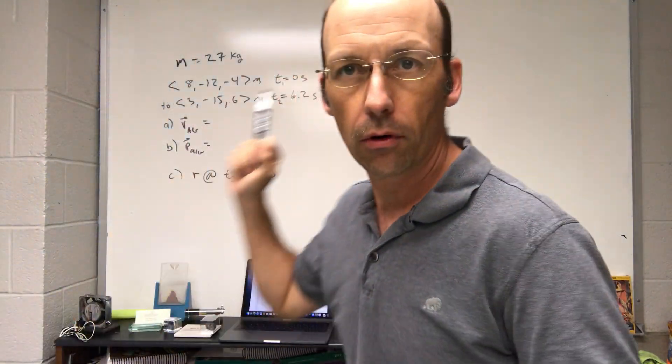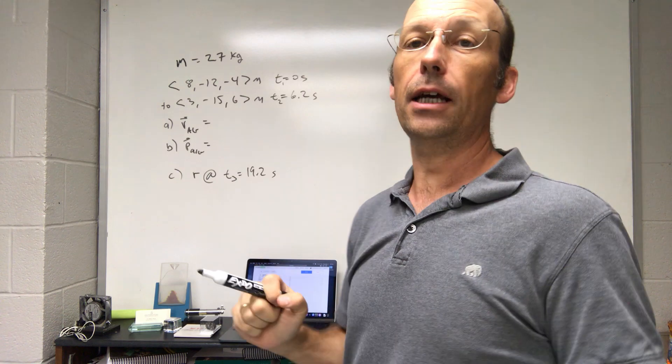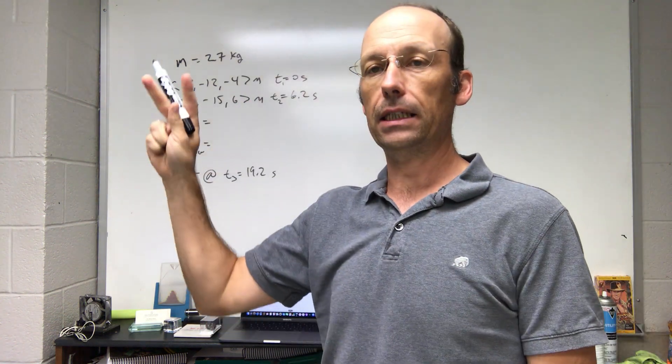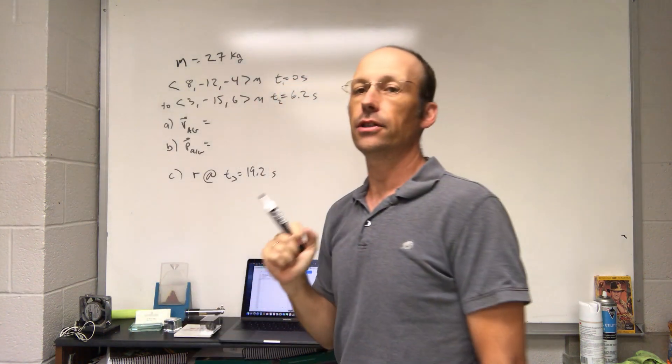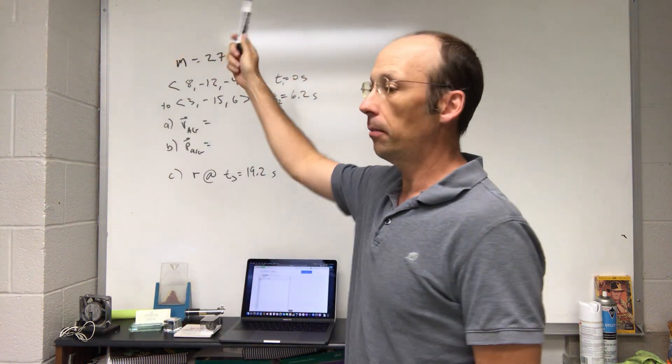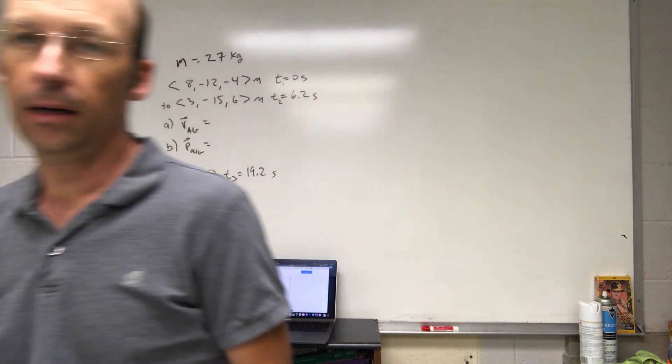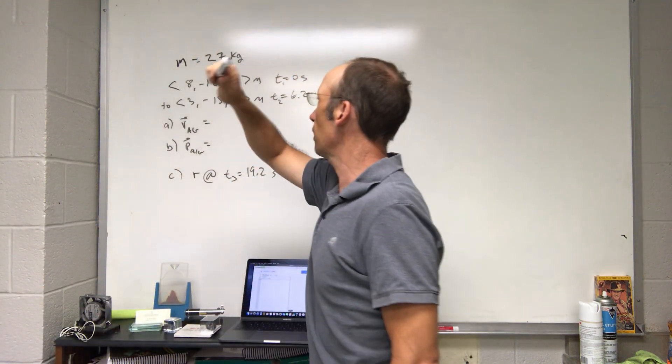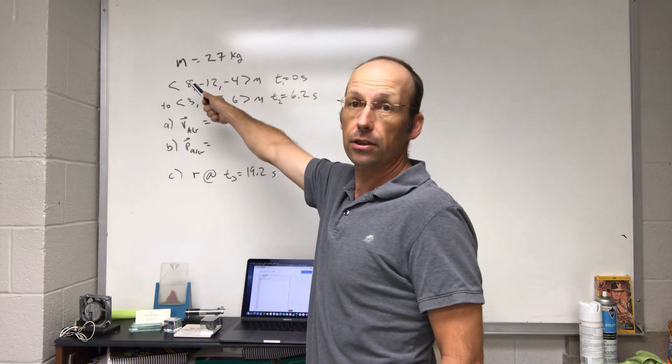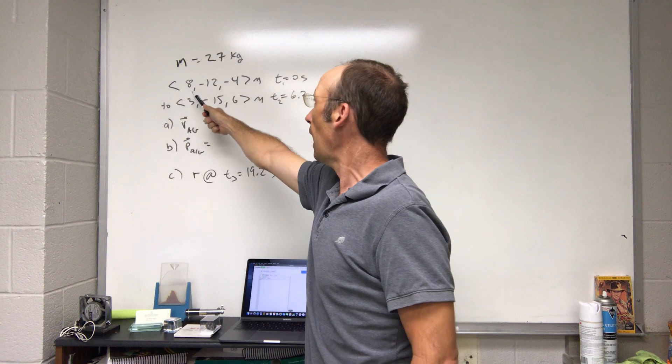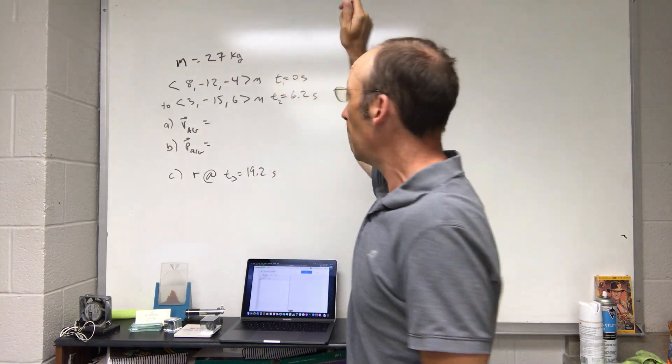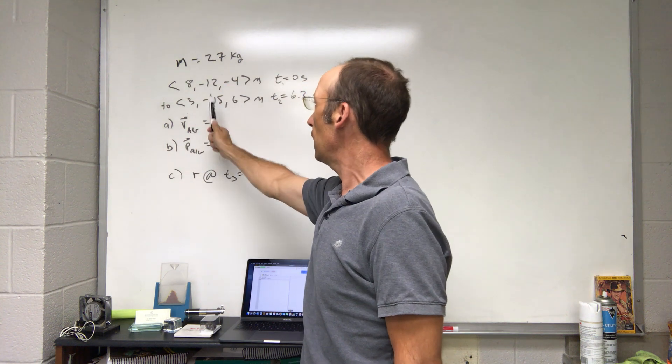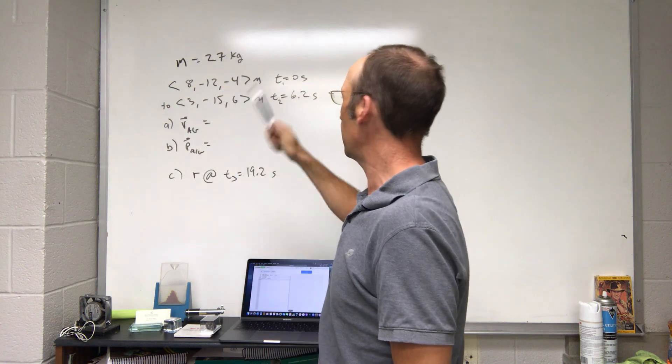Okay, here is an example problem using position, velocity, and average velocity and momentum. The problem says that some object with a mass of 27 kilograms starts at this position: (8, -12, -4) meters at t equals 0 seconds, and then later it's at (3, -15, 6) meters at t equals 6.2 seconds.